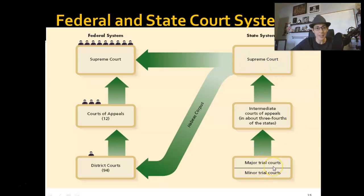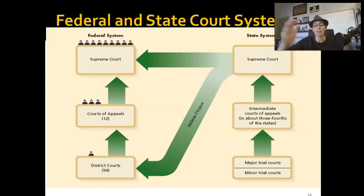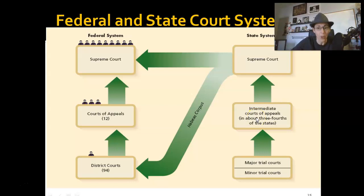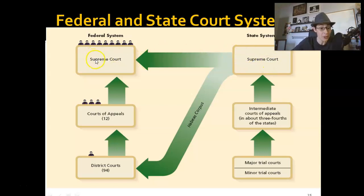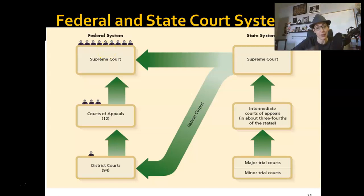Most cases start out as state cases. You have trial courts — major and minor. If you commit a murder, assault, battery, things like this, they'll go through a trial system. Then you have intermediate courts of appeals, and then you have the state Supreme Court. Once you've hit the state Supreme Court, depending on the kind of case, you can appeal directly to the Supreme Court, or you have to go through the district courts, into the Court of Appeals, and then if the Supreme Court agrees to take your case, it would get there that way.